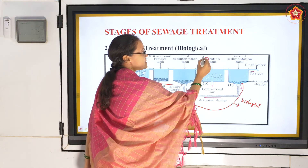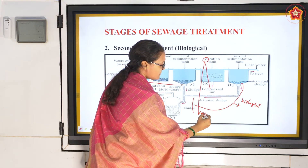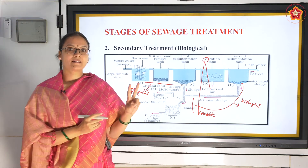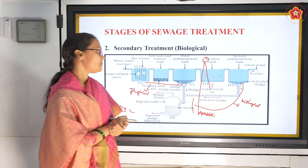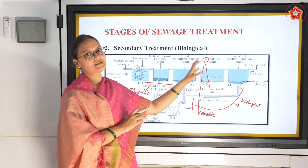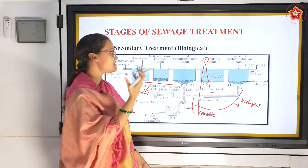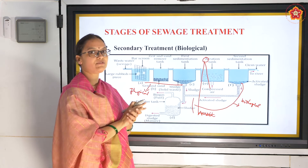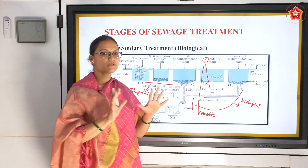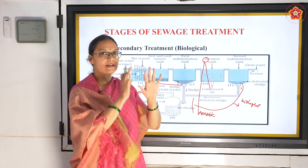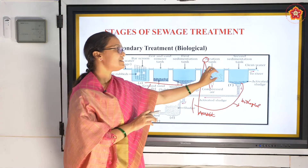In the aeration tank, two things are added: air and aerobic bacteria. The aerobic bacteria try to eat up all the organic matter present in the effluent. First aerobic bacteria are added, then air, and the tank is constantly agitated. As the aeration tank is agitated it forms something called flocs - colonies of aerobic bacteria with a mesh-like structure. The whole aeration tank is filled with these mesh-like aerobic bacterial colonies called flocs, and they start eating up the organic matter.